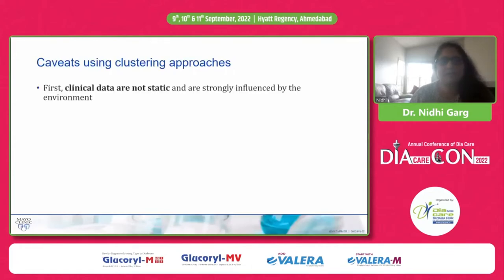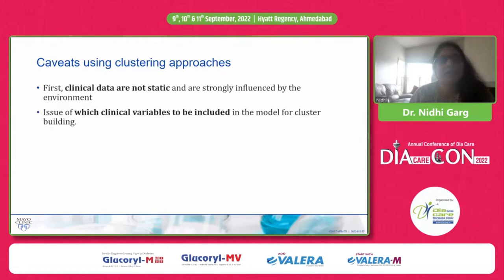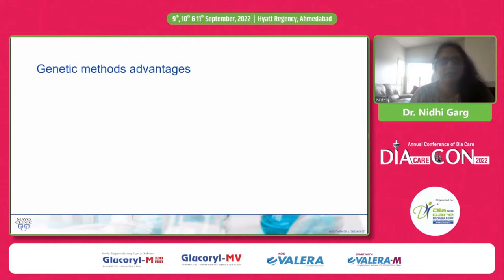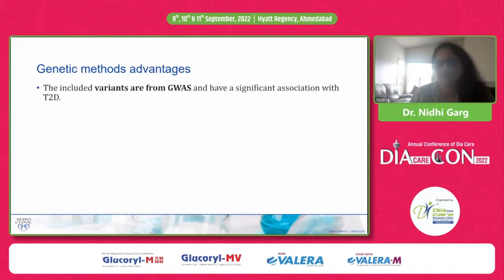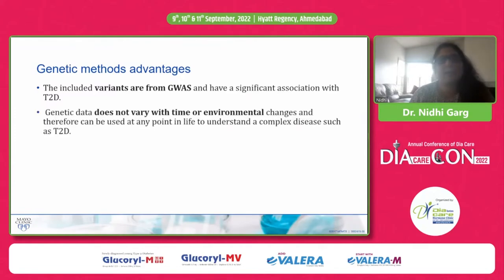Caveats of the clustering approach include: clinical data is not static and is strongly influenced by the environment — a person who starts exercise and lifestyle modification will change their clinical data. Also, choosing which variables to include in the clustering model is challenging. The genetic model overcomes these issues because it uses variants from GWAS with significant associations with type 2 diabetes, and it does not vary with time or environment — so it can be used at any point in life to understand complex diseases like type 2 diabetes.